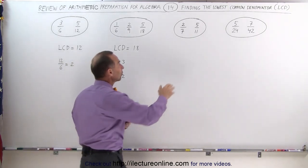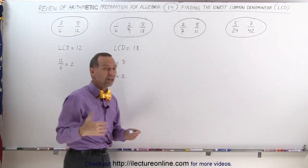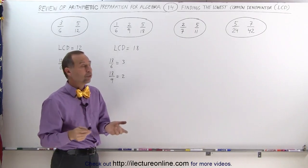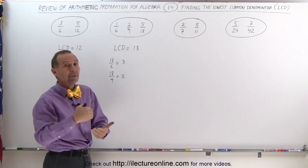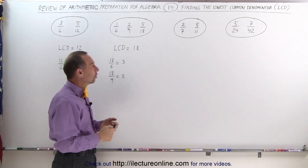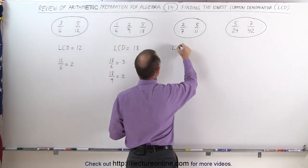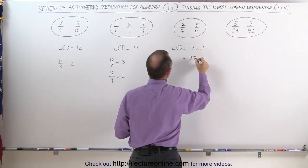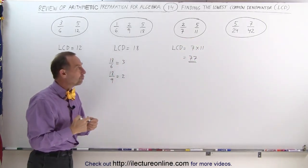When we go to the next set of fractions, notice that 7 does not fit evenly into 11. We also notice that both denominators, 7 and 11, are both prime numbers, which means they cannot be broken down into smaller numbers or written as a product of prime numbers. In that case, the lowest common denominator is simply the product of the two denominators. The LCD is equal to 7 times 11, which equals 77.